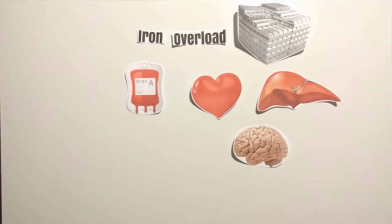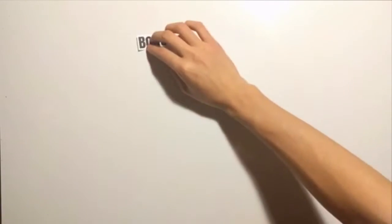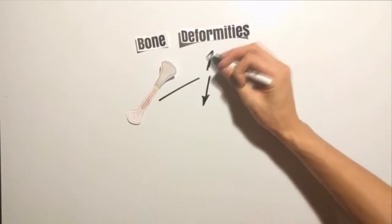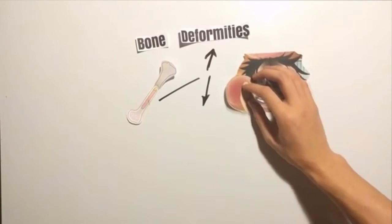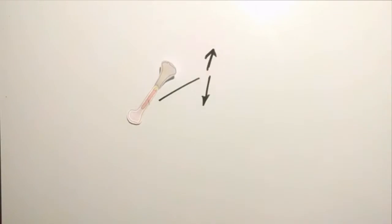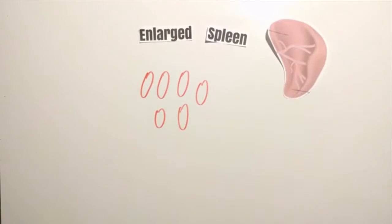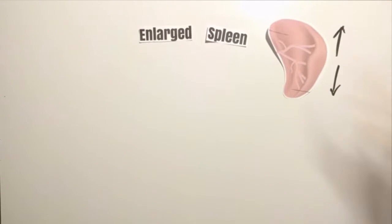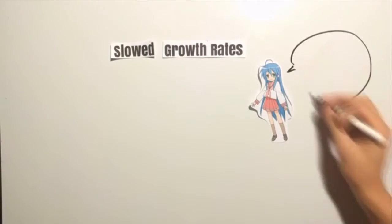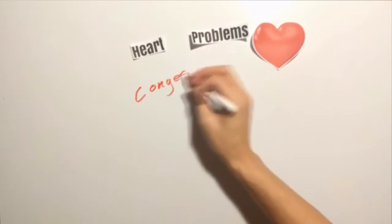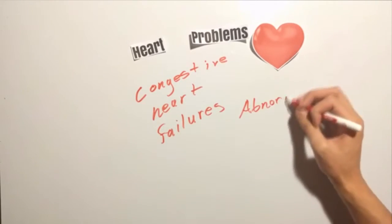Bone deformities: Thalassemia can make the bone marrow expand, which causes bones to widen. This can result in abnormal bone structure, especially in the face and skull. Bone marrow expansion also makes bones thin and brittle, increasing the risk of broken bones. Enlarged spleen: Thalassemia is often accompanied by the destruction of a large number of red blood cells, and the task of removing these cells causes the spleen to enlarge. Slowed growth rates: Anemia can cause a child's growth to slow, and puberty may also be delayed in children with thalassemia. Heart problems: Diseases such as congestive heart failure and abnormal heart rhythms may be associated with severe thalassemia.